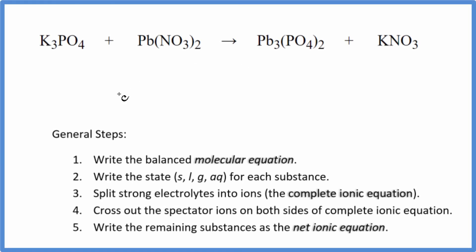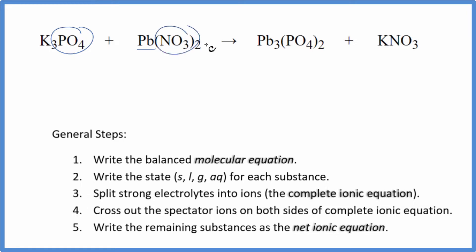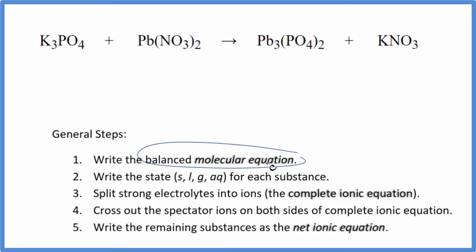In this video, we'll write the balanced net ionic equation for K3PO4 plus Pb(NO3)2. This is potassium phosphate and this is lead-2 nitrate. The first thing we need to do for our net ionic equation is balance the molecular equation.